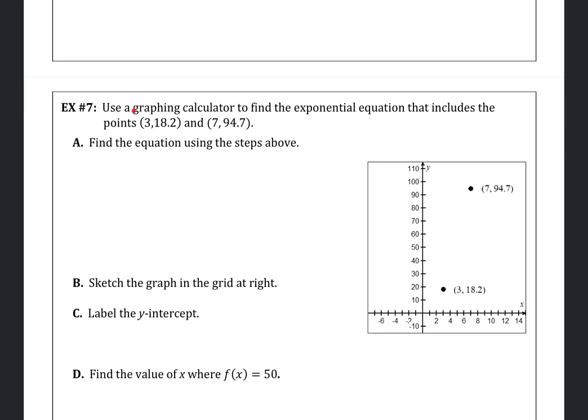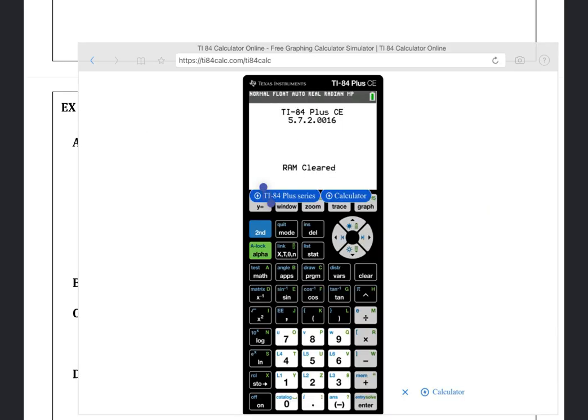We're going to look at this example with the point (3, 18.2) and (7, 94.7). We've got those graphed over here, and use our TI-84 to get that set up and modeling an equation for us. I've got my calculator here, and our directions say if we press the stat button, the edit button, which is number 1,